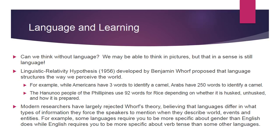However, modern researchers have largely rejected Whorf's theory, believing that languages differ in what types of information they force speakers to mention when describing the world, events, and entities. For example, some languages require you to be more specific about gender than English does — in Spanish or French, articles are either feminine or masculine. English doesn't differentiate those, whereas English is very specific about verb tense, which is not the same in some of these other languages.